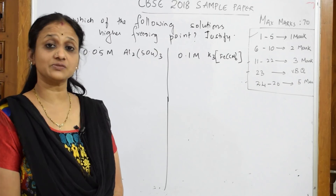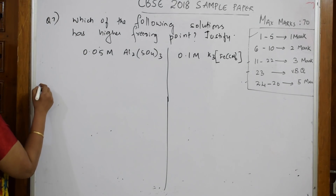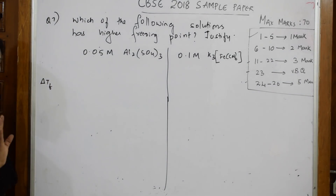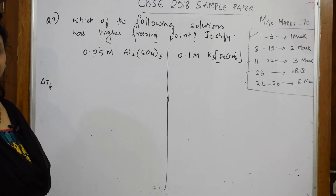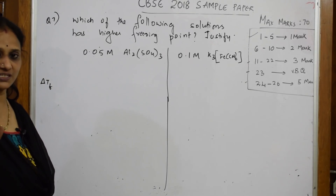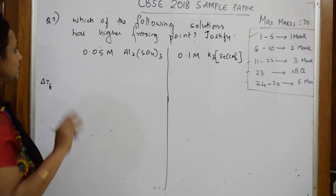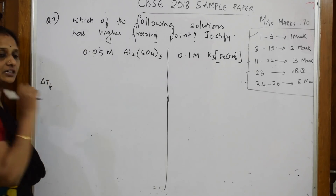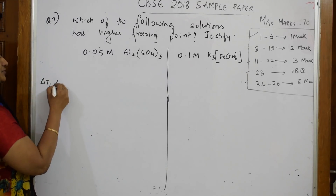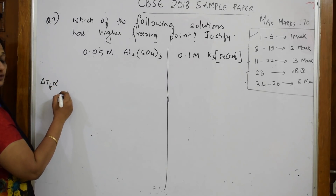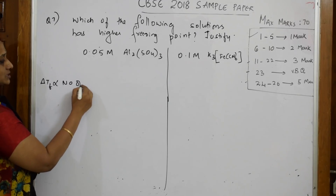What formulas have we studied? We have studied ΔTf — the depression in freezing point — which equals the cryoscopic constant into molality. Now what do they ask? Which solution will have a higher freezing point? One formula you have to remember: ΔTf is directly proportional to the number of particles.